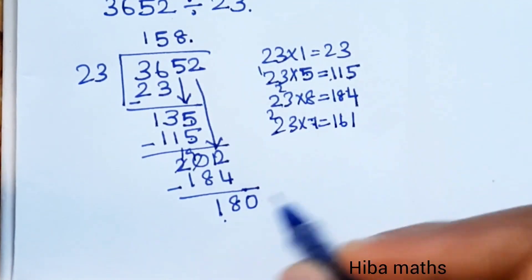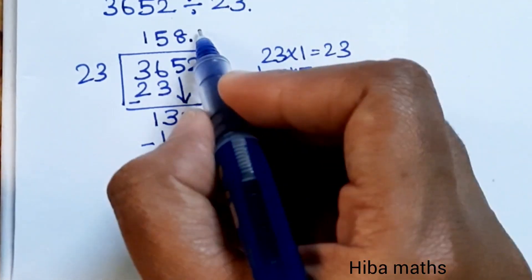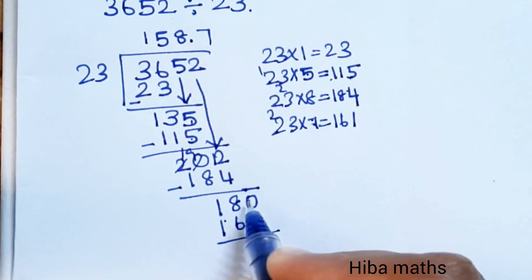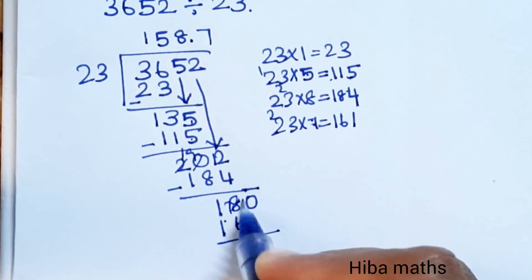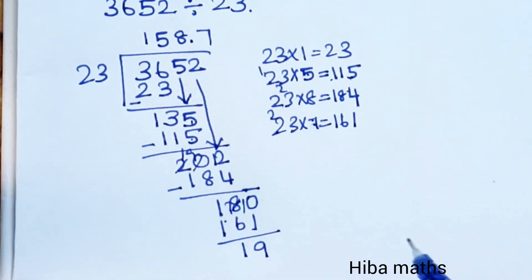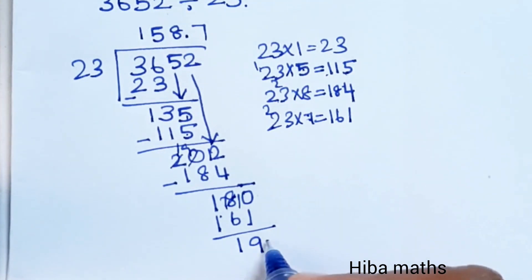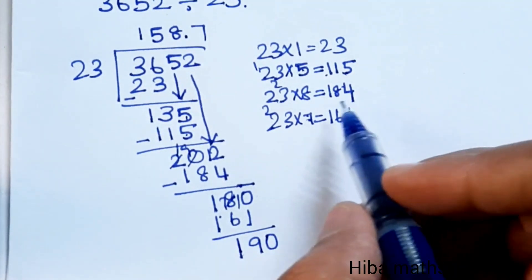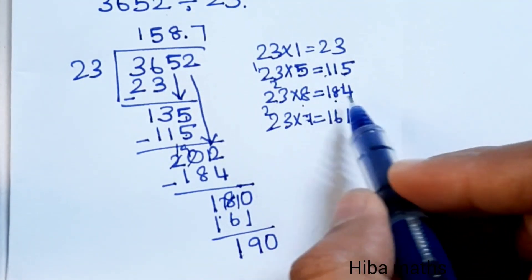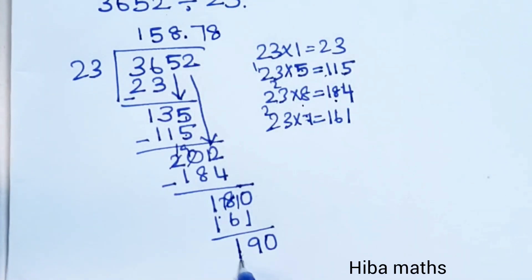Since the remainder 18 is less than 23, we add a decimal point and bring down a zero to get 180. 23 into 180: 7 times 23 is 161. Already used one decimal place, so we continue. 23 into 184 is 8 times.